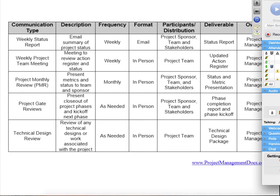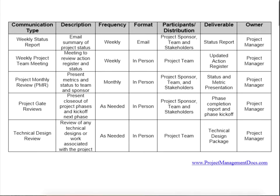The columns in the communications matrix are: communication type, a description of what that is — are we meeting via email, via Skype, in a particular conference room? — what's the frequency, what's the format, who are the participants, and what's the deliverable. For the weekly status report, you need to create a status report ahead of time and distribute it to all meeting participants beforehand, and the owner is going to be you. Making sure everybody understands and agrees to the communication expectations up front makes your job really easy to facilitate that communication.